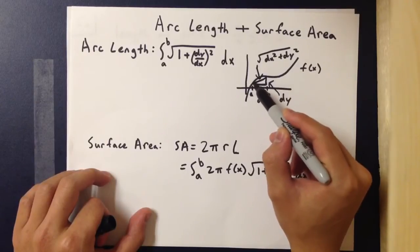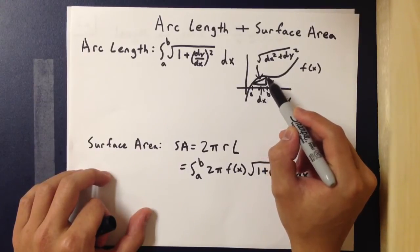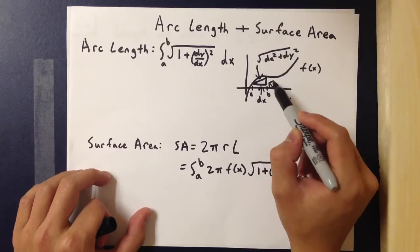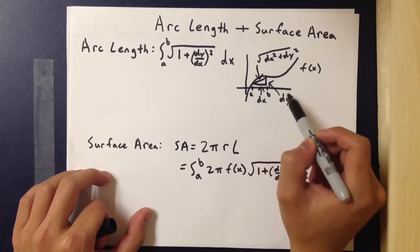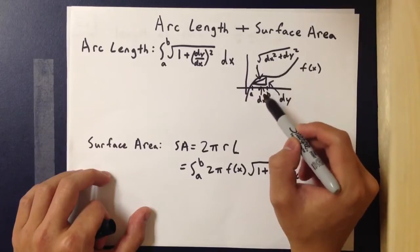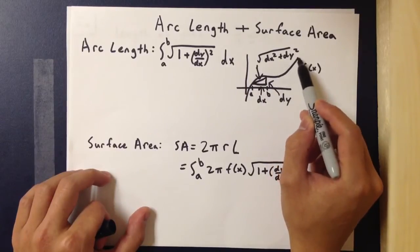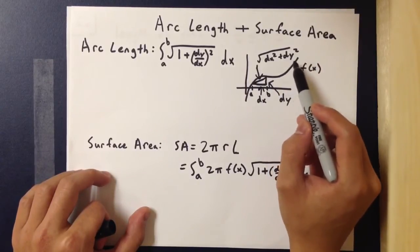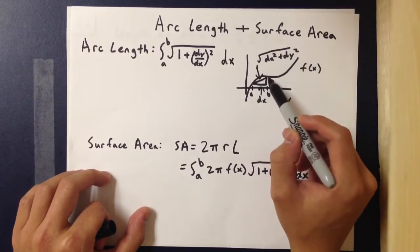...using the hypotenuse to approximate the arc length, the length of the hypotenuse would be, using the Pythagorean theorem, the square root of Δx² plus Δy².